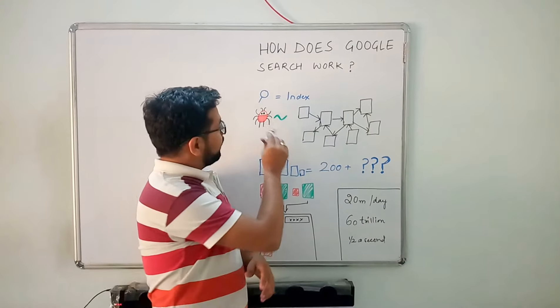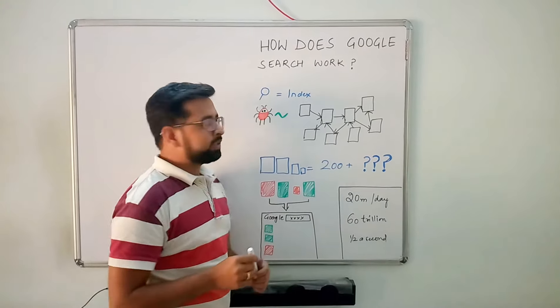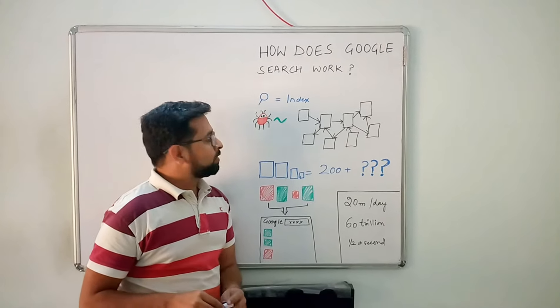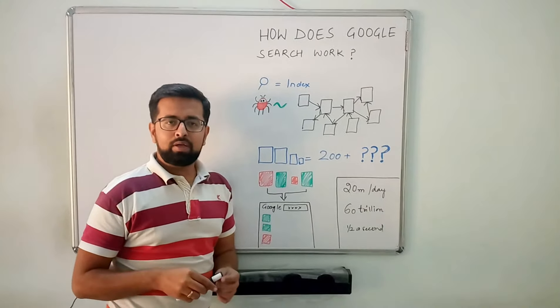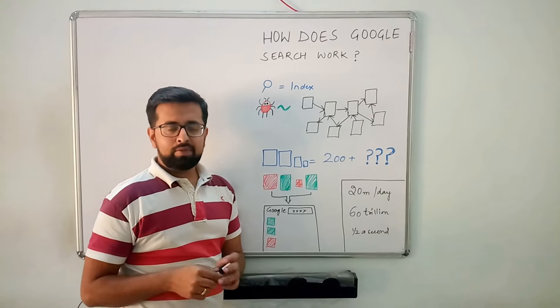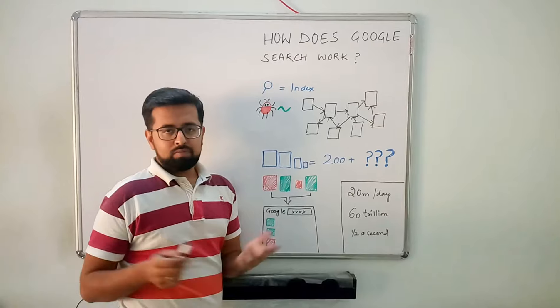This starts with something called a Google Spider or Google Bot. It's not a real spider, but it's a machine learning crawler—a bot that runs all the time, 24/7, 365 days a year.